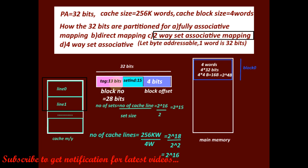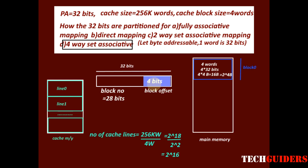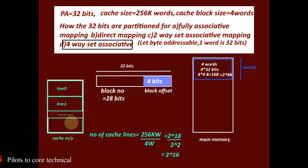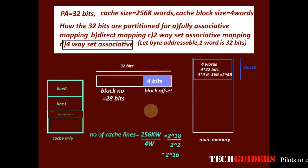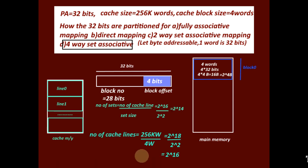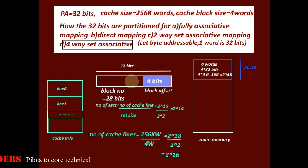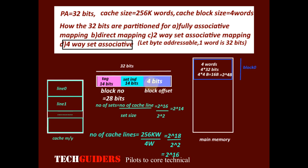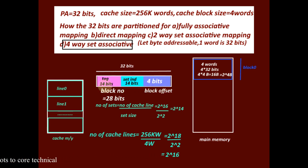In four-way set associative mapping, cache lines are grouped into sets with each set containing four cache lines. The number of sets = total cache lines ÷ 4 = 2^16 ÷ 2^2 = 2^14. So 14 bits are required to address each set uniquely. The least significant 14 bits of the block index are used as the set index, and the remaining bits, 28 − 14 = 14 bits, are used as the tag. So the partitioning is: tag = 14 bits, set index = 14 bits, word = 4 bits.